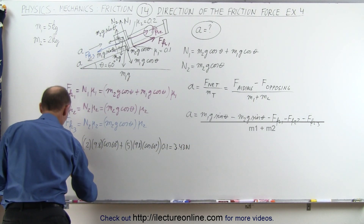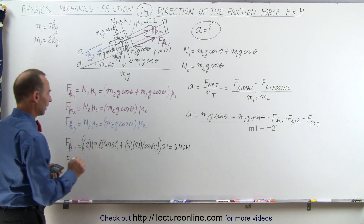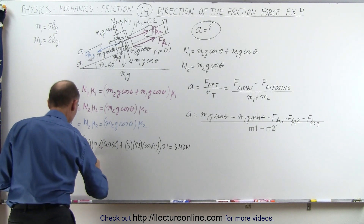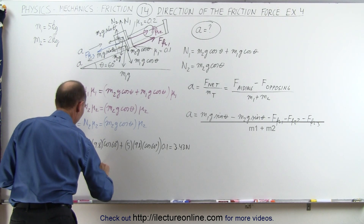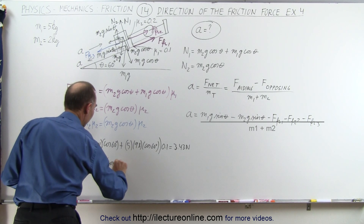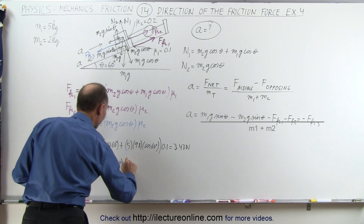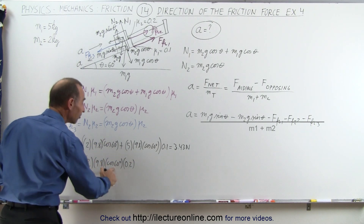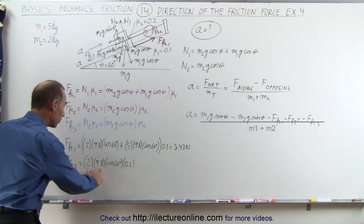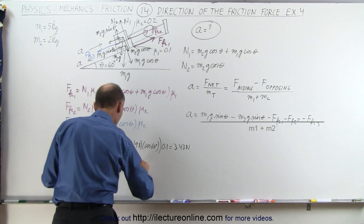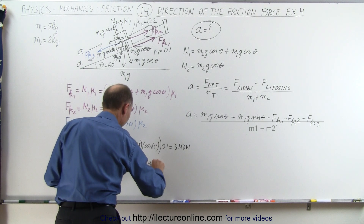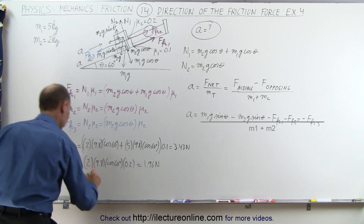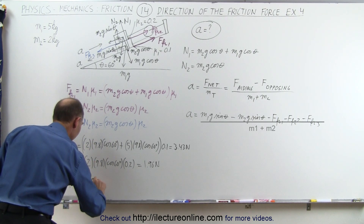Force friction two equals m2 (2 kilograms) times 9.8 times the cosine of 60 degrees, times mu2 (0.2). That gives us 2 times cosine of 60, which is 1, times 9.8 times 0.2, equal to 1.96 newtons. And force friction three has exactly the same magnitude as force friction two — 1.96 newtons.